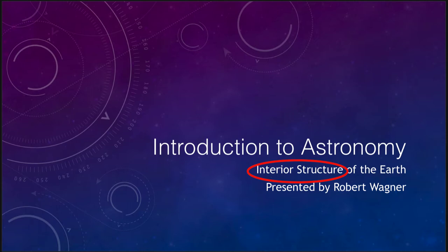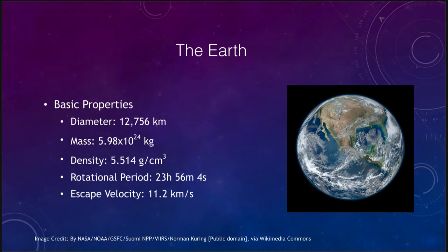So let's start off by looking at some basic properties of the Earth. The diameter is 12,756 kilometers. That would be the distance from one edge of the Earth to the other, straight across. The mass of the Earth is about 6 times 10 to the 24th kilograms. And that is how much material there is.